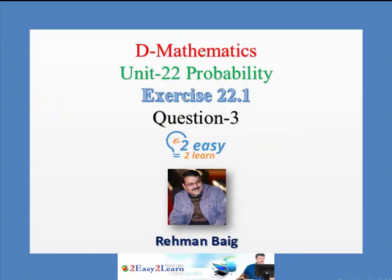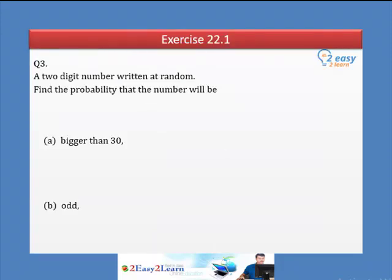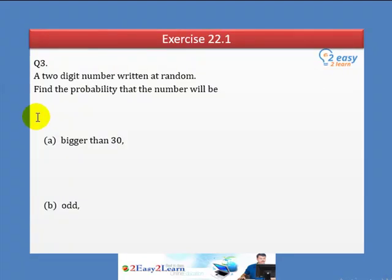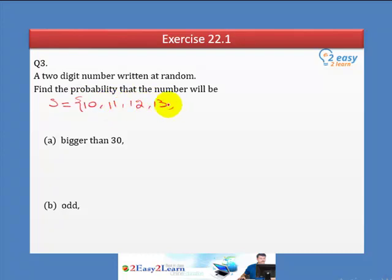D Mathematics Unit 22 Probability, Exercise 22.1, Question Number 3. A two-digit number is written at random. Find the probability that the number is bigger than 30, and Part B, is an odd number. The sample space is all two-digit numbers from 10 to 99.